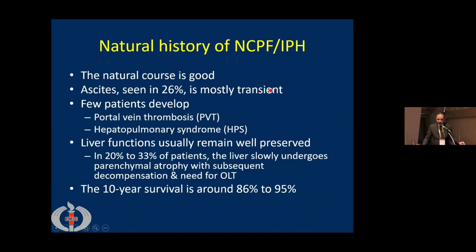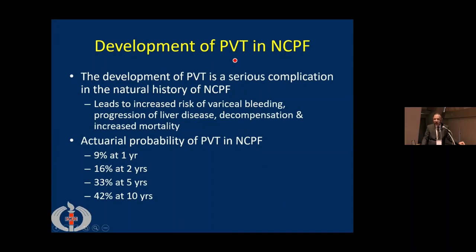The natural course of this disease remains good. Ascites is seen in 26% but is mostly transient. Few patients develop portal vein thrombosis and hepatopulmonary syndrome. Liver function remains very well preserved in most patients, and the 10-year survival rate is about 86–95%. Development of portal vein thrombosis in NCPH is a serious complication, increasing portal pressure and risk of variceal bleeding and potentially leading to liver decompensation and increased mortality. The probability of developing portal vein thrombosis is about 9% at one year and 42% at 10 years.